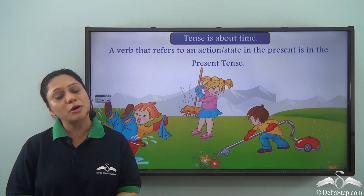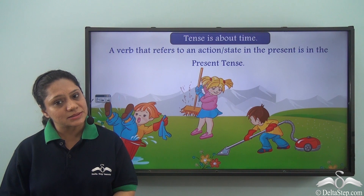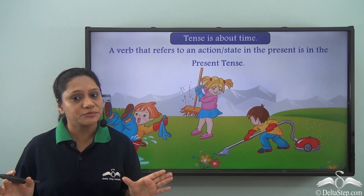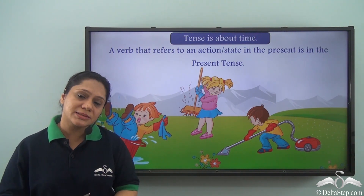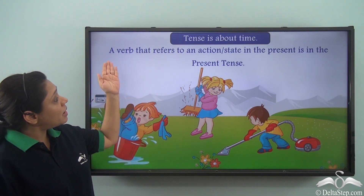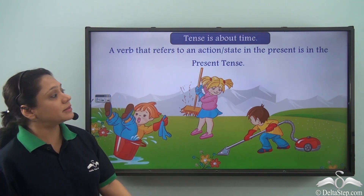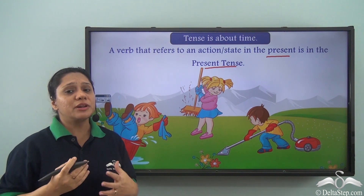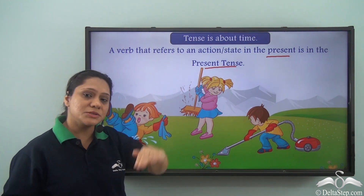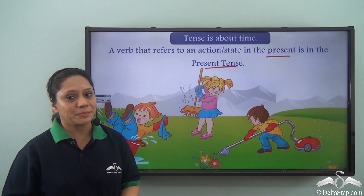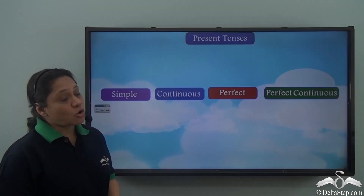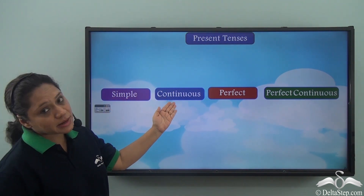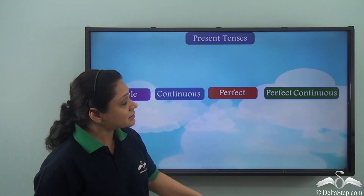You have learnt in detail about the different kinds of tenses, and you know by now that tense is about time. There are three main kinds of tenses: the present tense, the past tense, and the future tense. A verb that refers to an action or state in the present is in the present tense. Present tenses are of four kinds: the simple present tense, the present continuous tense, the present perfect tense, and the present perfect continuous tense.